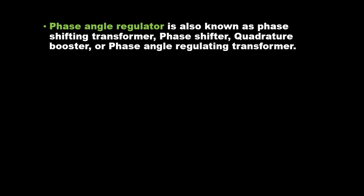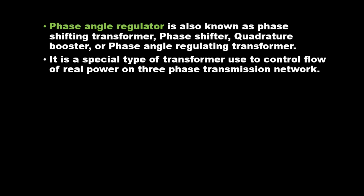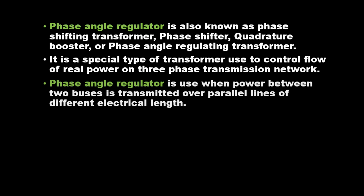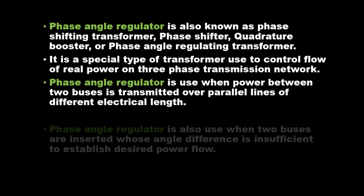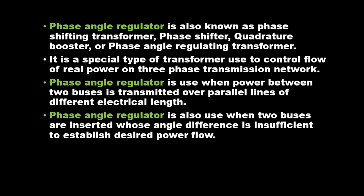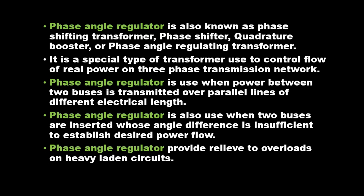It is a special type of transformer used to control flow of real power on three-phase transmission network. Phase angle regulator is used when power between two buses is transmitted over parallel lines of different electrical length. It is also used when two buses are interconnected whose angle difference is insufficient to establish the desired power flow.